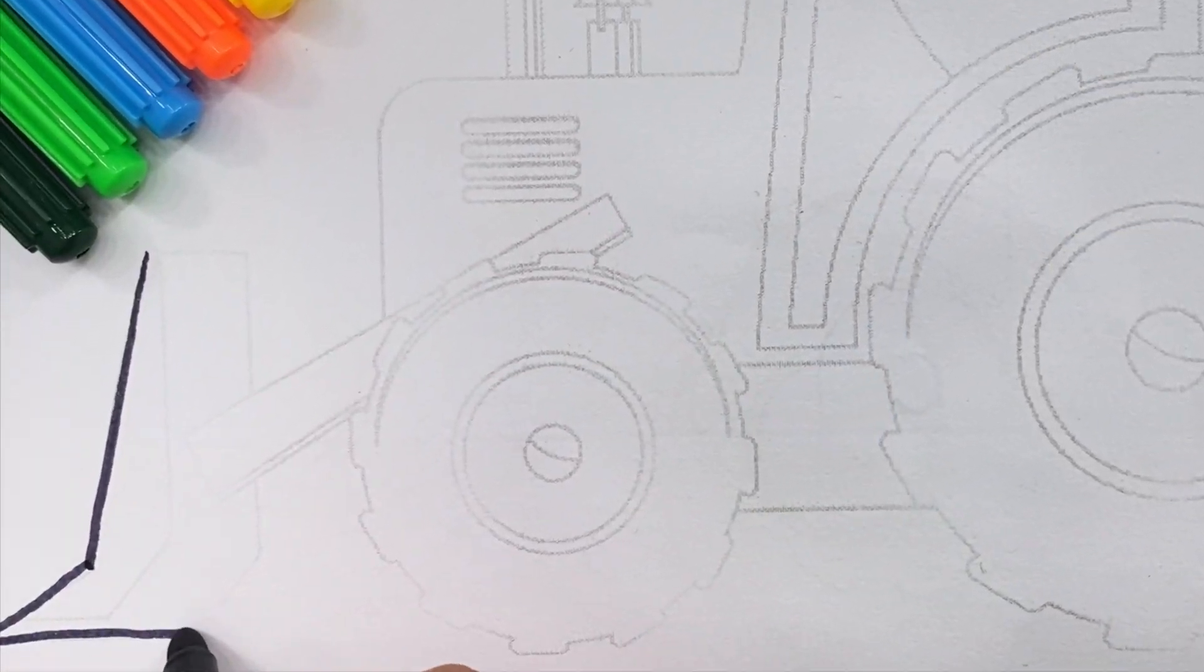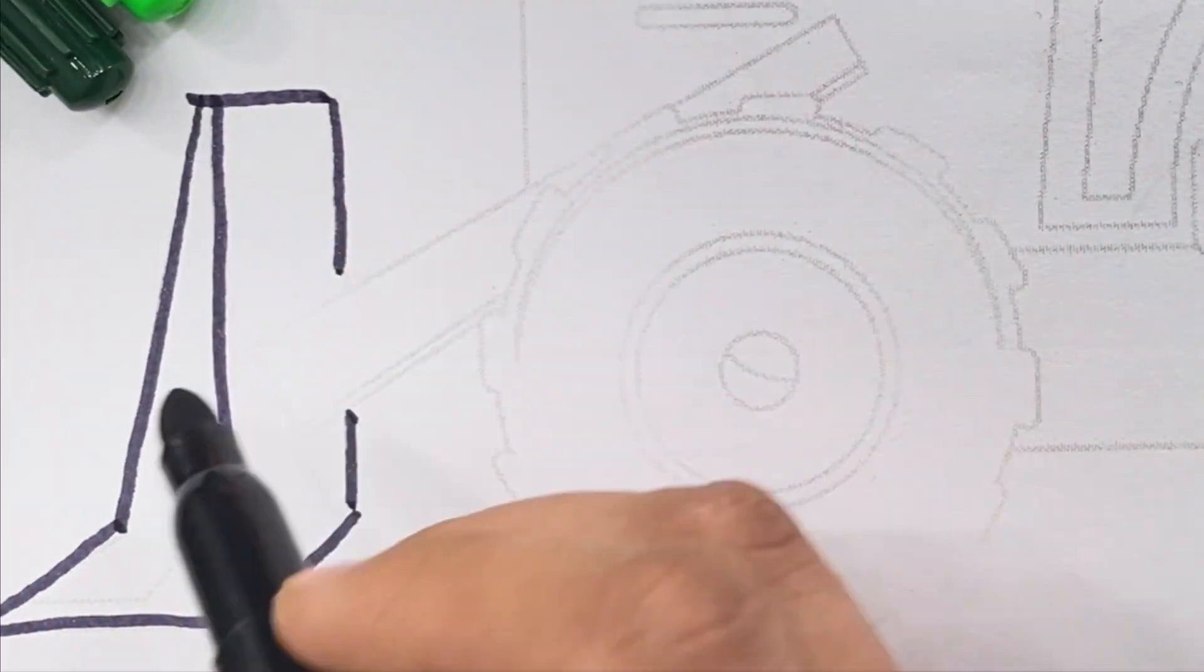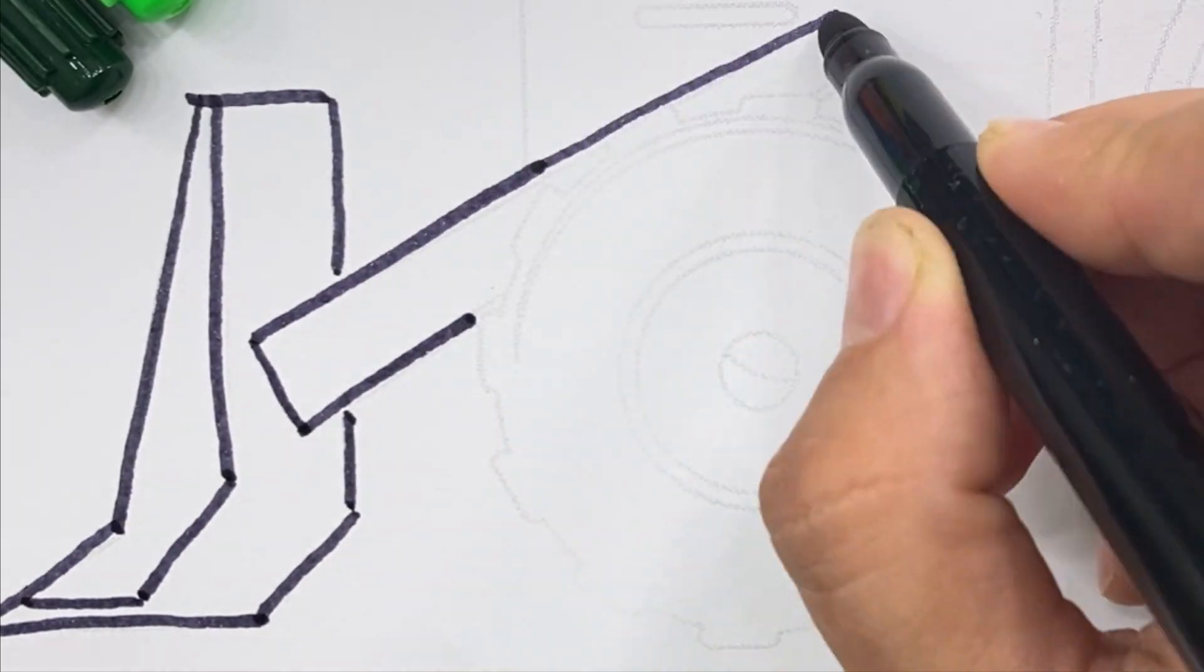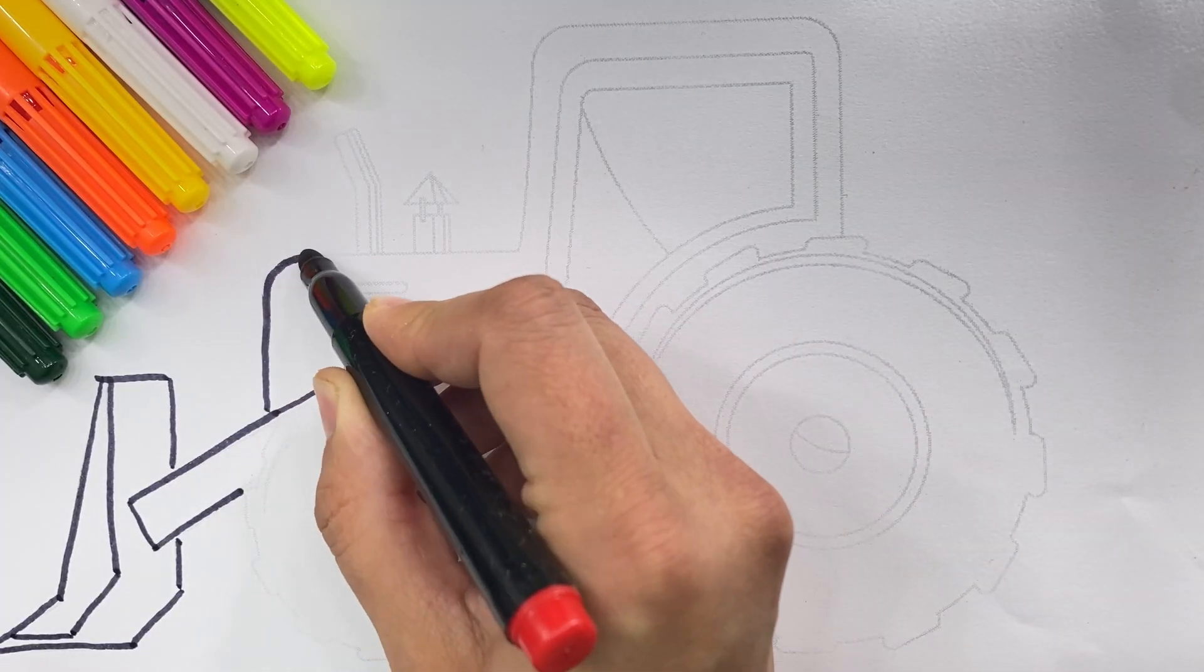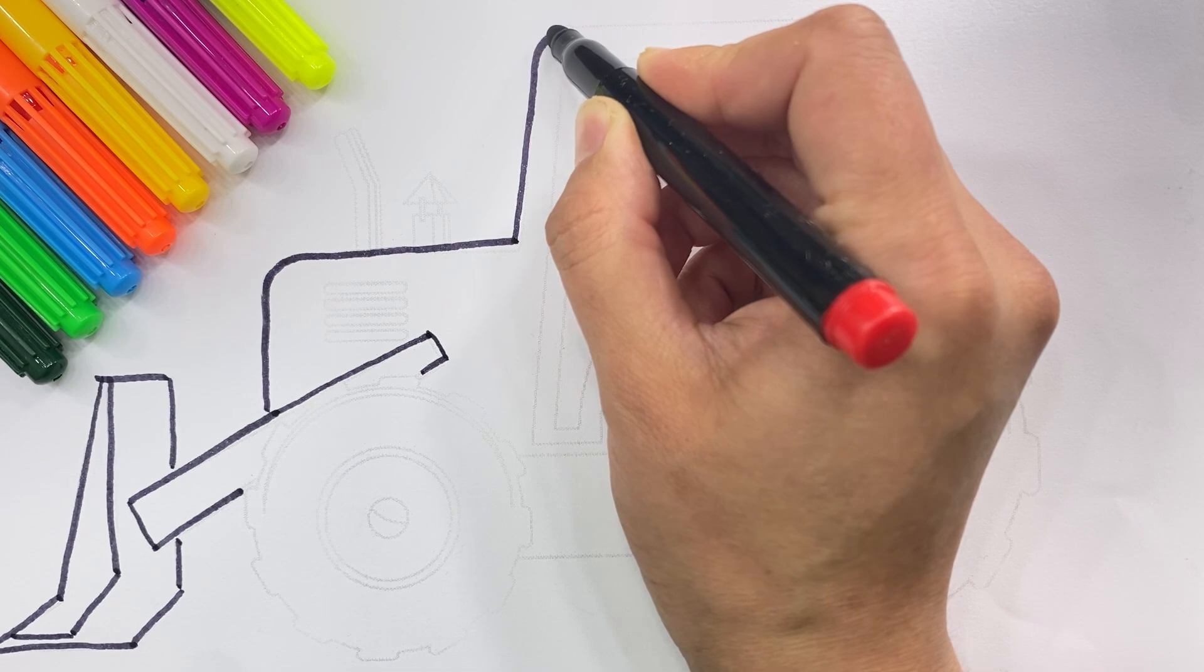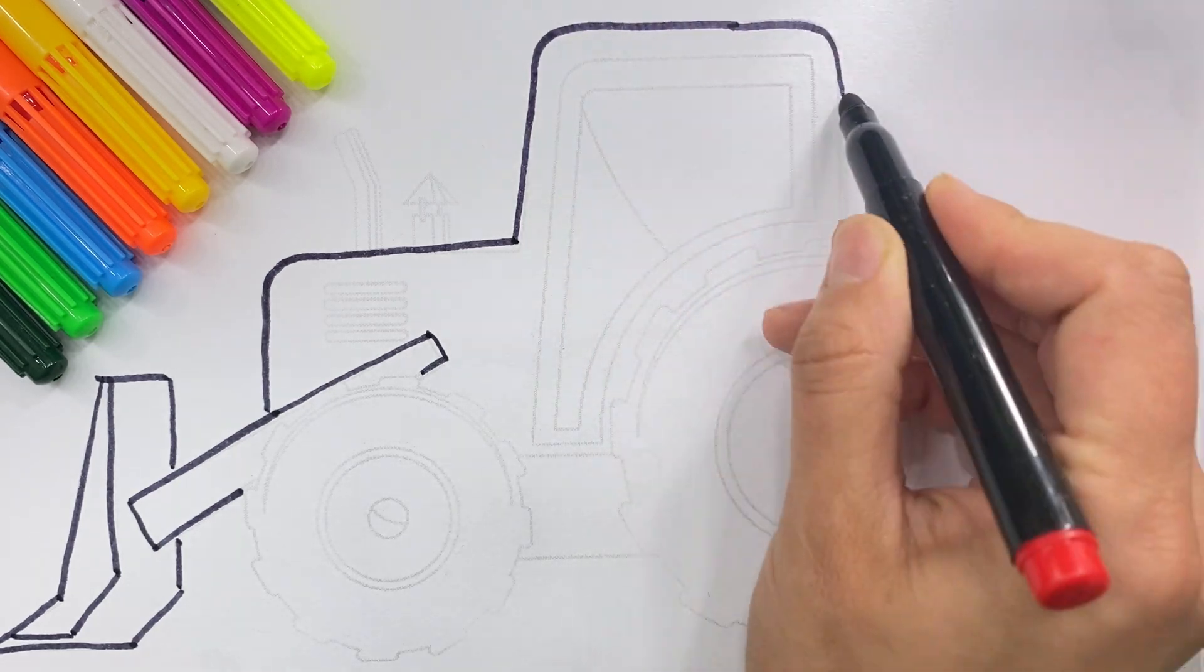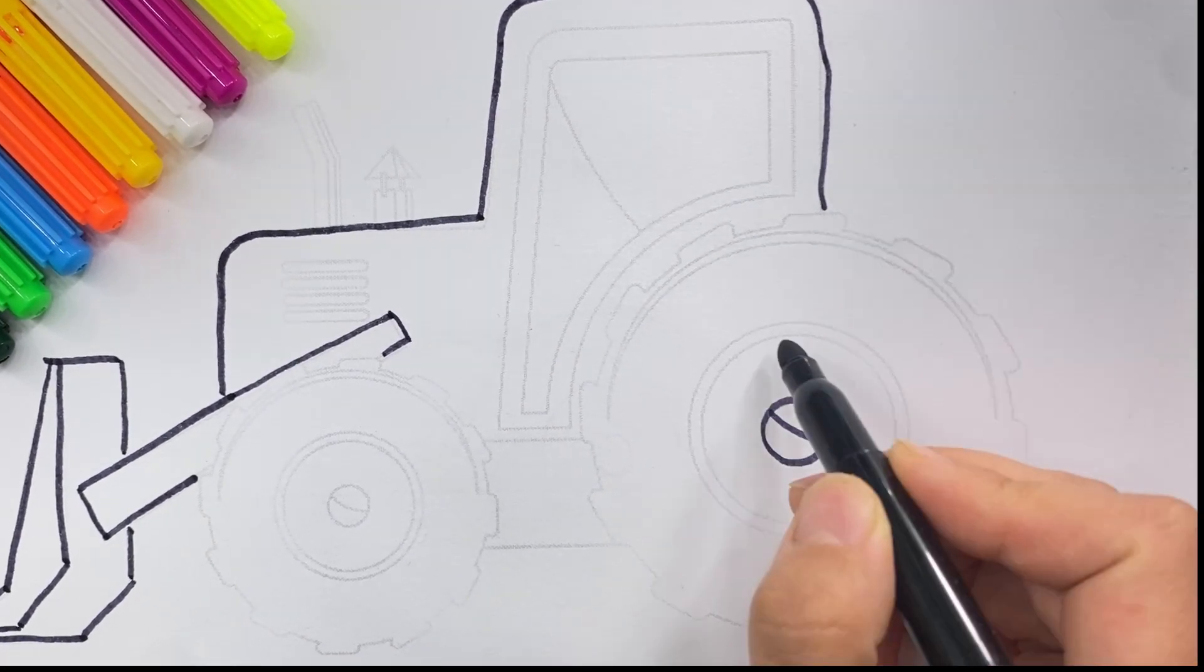At first I'm drawing a bucket of the tractor. Next I'm drawing a tractor. I'm drawing a rear wheel.